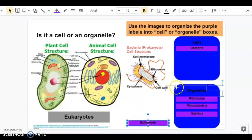Eukaryote is a cell. Plants and animals are made of eukaryotic cells like the ones pictured here.